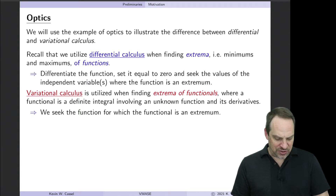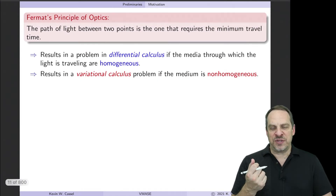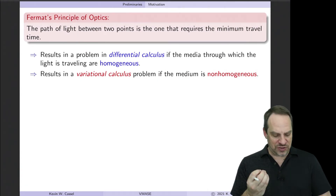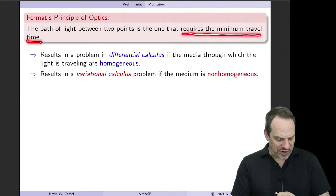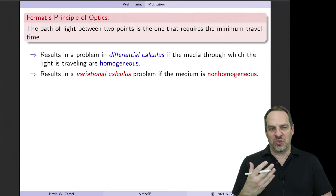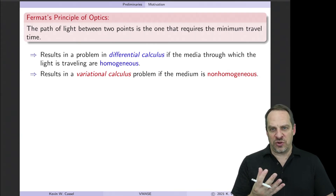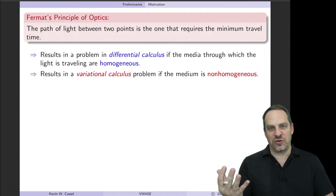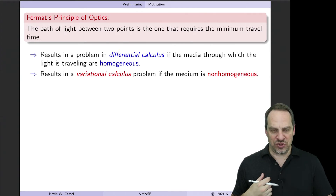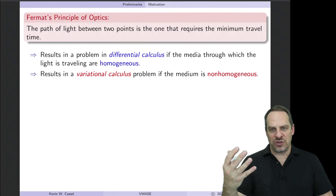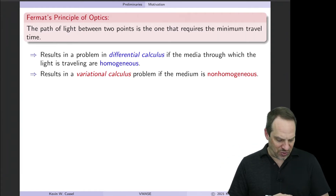You can see the parallels: extrema of functions and extrema of functionals. So let's look at optics, which is a great example. The principle is very simple — it's Fermat's principle. It says that the path of light between any two points is the one that requires the minimum travel time. The principle is stated in words, which is very often the case for the most fundamental principles of physics, like the first law of thermodynamics or conservation of energy. We want to take those words and express them in the most natural way mathematically.